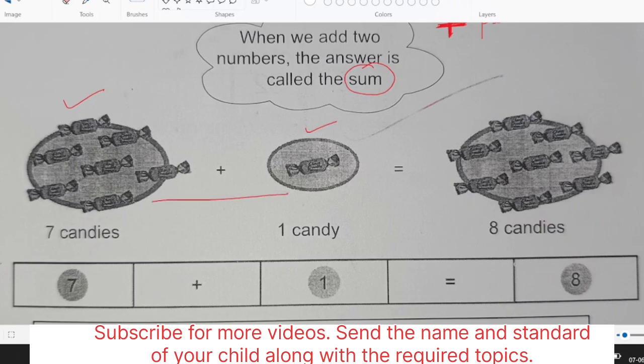Take an example here. We have seven candies and here we have one candy. So when we will add them we will count them together, all together. Relate these words - all together, all together means ek saath. They will count seven plus one that is eight.